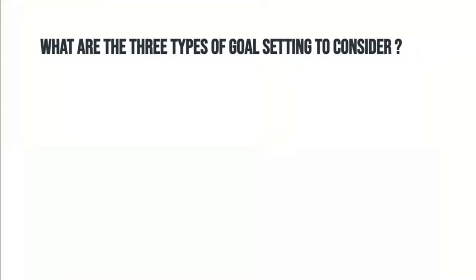In goal setting, there are three types of goals to consider. We first have long-term goals. These are goals that you want to achieve over several years, typically three to five. An example would be earning a bachelor's degree or finishing med school.